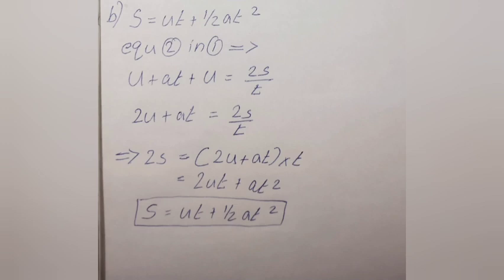Answer B: Equation 2 in 1 implies u plus at plus u is equal to 2s divided by t. By rearranging this, we get s is equal to ut plus half at square.